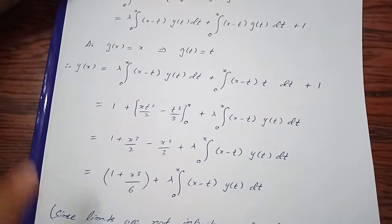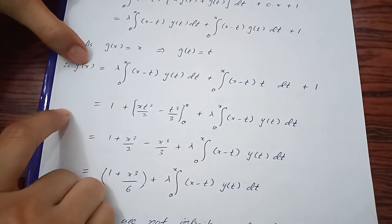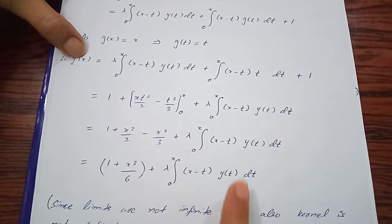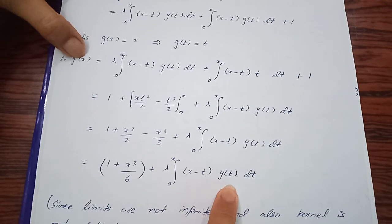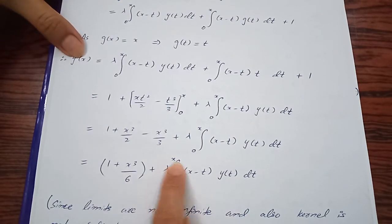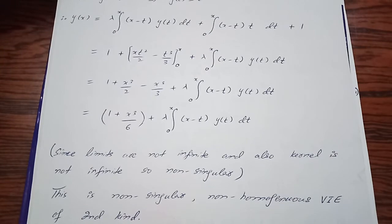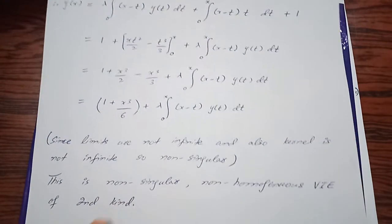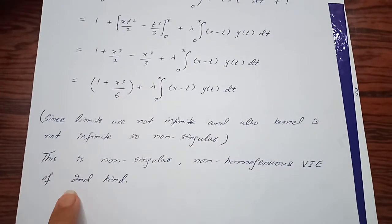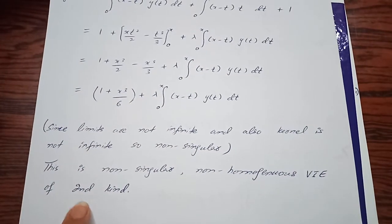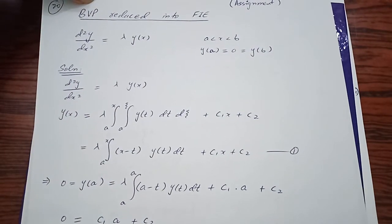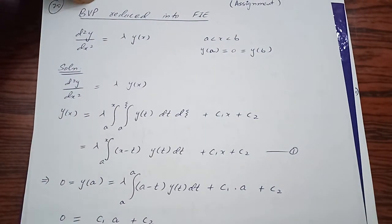The unknown function appears at two places, so it is the second kind of equation. The upper limit is variable, so this is a Volterra integral equation. You have a non-homogeneous part f(x), so this is a non-singular, non-homogeneous Volterra integral equation of second kind. I hope you're clear with converting the initial value problem into the Volterra integral equation. In the next video, we'll do the boundary value problem reduced into the Fredholm integral equation.